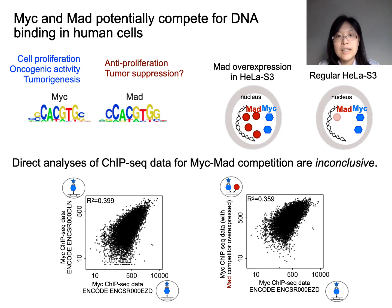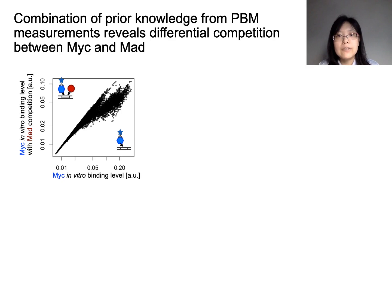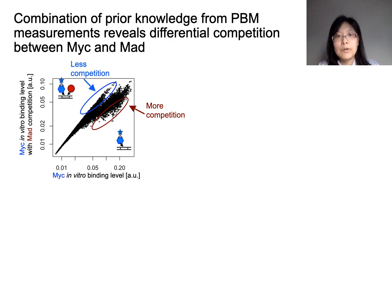Here we show that in the case where ChIP-seq data alone is inconclusive, we combine prior knowledge from in vitro measurements to help reveal that competition is happening in the cell. With the binding preferences of MIG and MAT profiled by in vitro assays, we first model the competition between them and visualize how we expect MAT to outcompete MIG. We saw that MIG can be outcompeted by MAT, shown by a decrease in its DNA binding levels. But due to differences in their DNA binding preferences, the level of competition is different at different genomic sites. MAT can effectively outcompete MIG at sites that are preferred by MAT, but not at sites that are preferred by MIG.